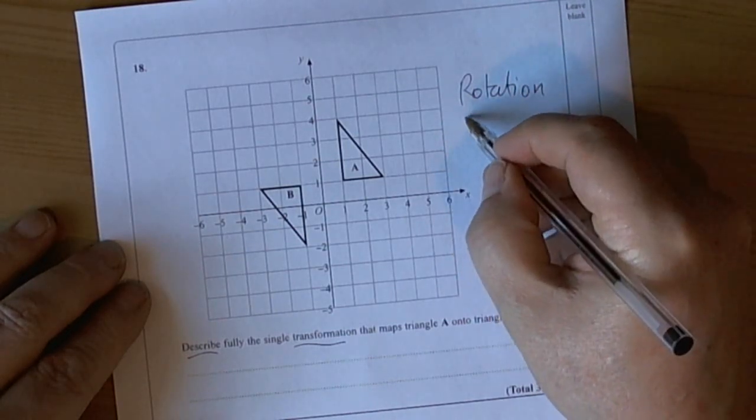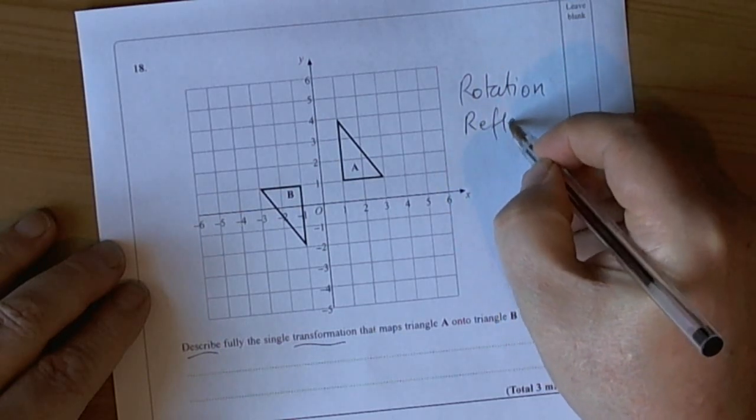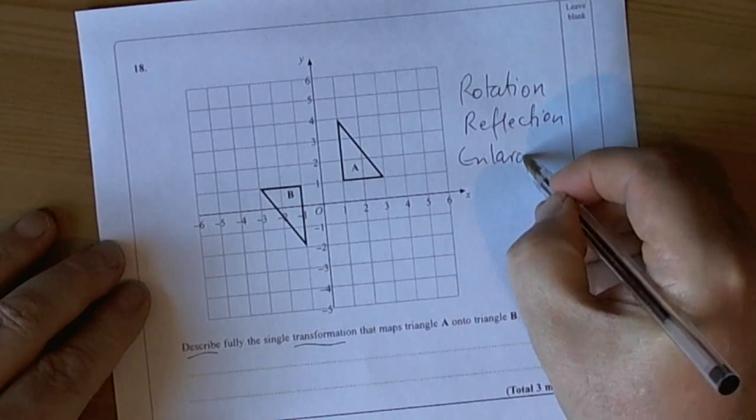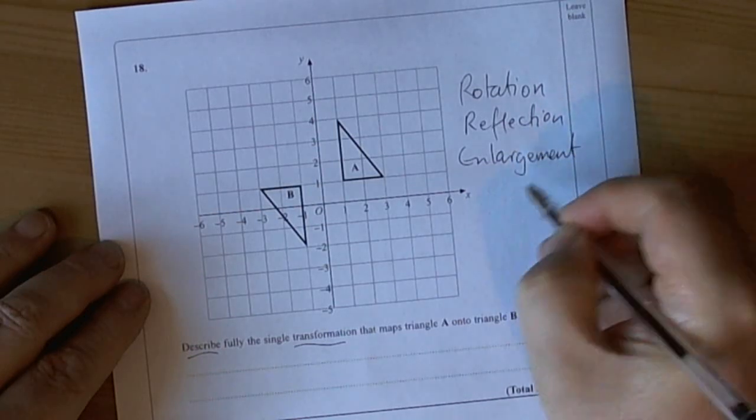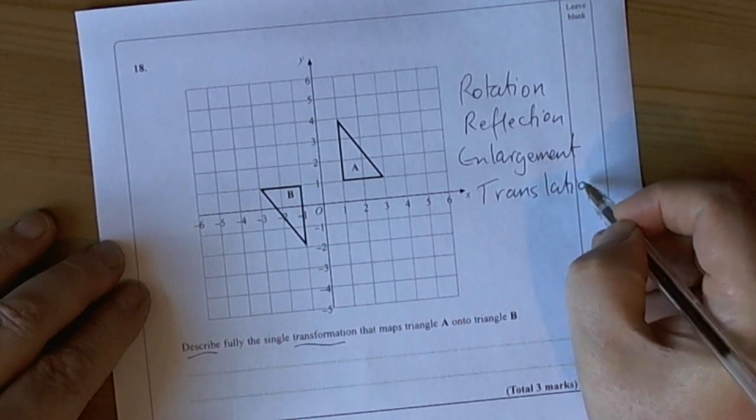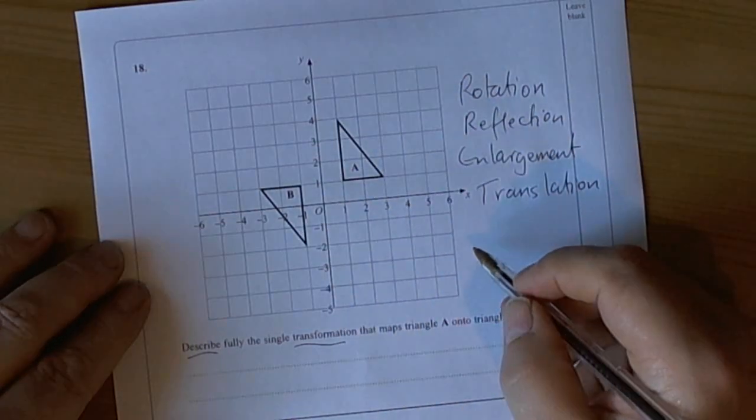So rotation, reflection, enlargement, and translation. Those are the four transformations that you're expected to deal with when you're dealing with shapes on squared grids.